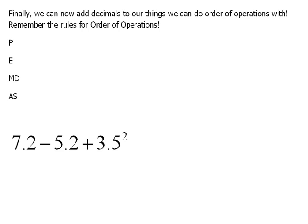Don't forget your rules for order of operations. It would be parentheses and grouping symbols first, then exponents, then multiplication and division — remember that's left to right, neither one is more important than the other — and then addition and subtraction, which again is left to right, neither one is more important. So these are basically the exact same operation.